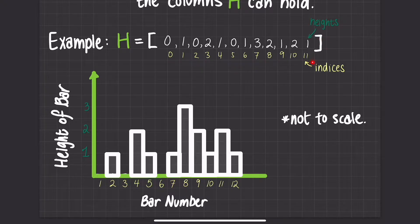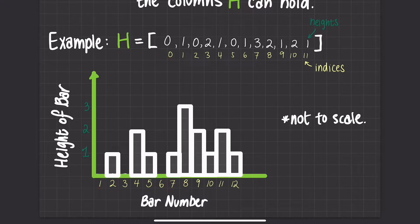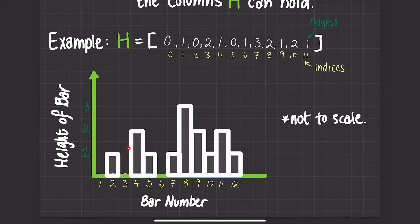These are the numbers given in the array and they represent the heights. Underneath I've written the indices. I've drawn up a graph to represent what this means, so bar numbers 1 through 12 represent the (index + 1)th position. For example, at the first bar there are 0 units tall, at the second bar it is 1 unit tall, and the third bar is 0 units tall, so on and so forth. This is our graph or map.